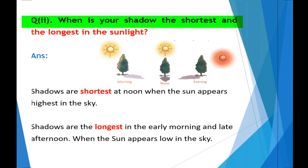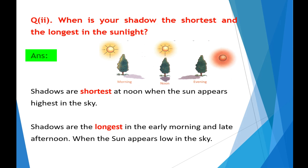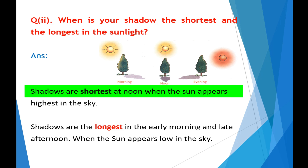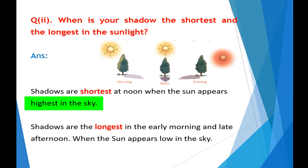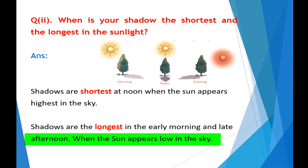Question No. 2: When is your shadow the shortest and the longest in the sunlight? Answer: Shadows are shortest at noon when the sun appears highest in the sky. Shadows are the longest in the early morning and late afternoon when the sun appears low in the sky.